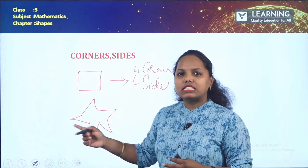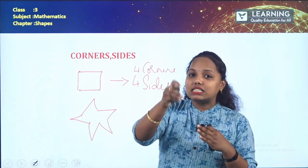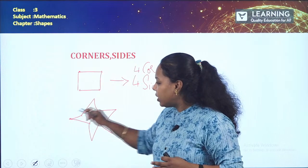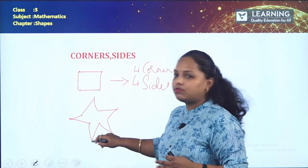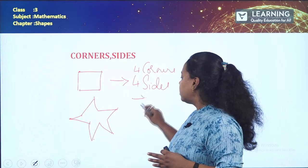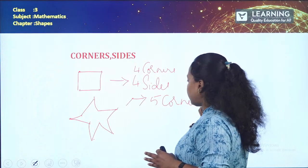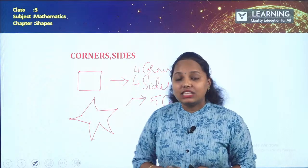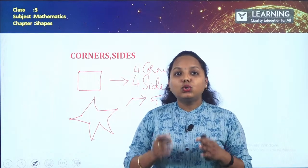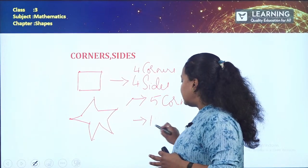How about the star shape? A corner is where two lines or two sides meet at a point. Counting the corners of the star: 1, 2, 3, 4, 5 — it has five corners. And the sides: 1, 2, 3, 4, 5, 6, 7, 8, 9, 10 — total there are ten sides. So a star has five corners and ten sides.